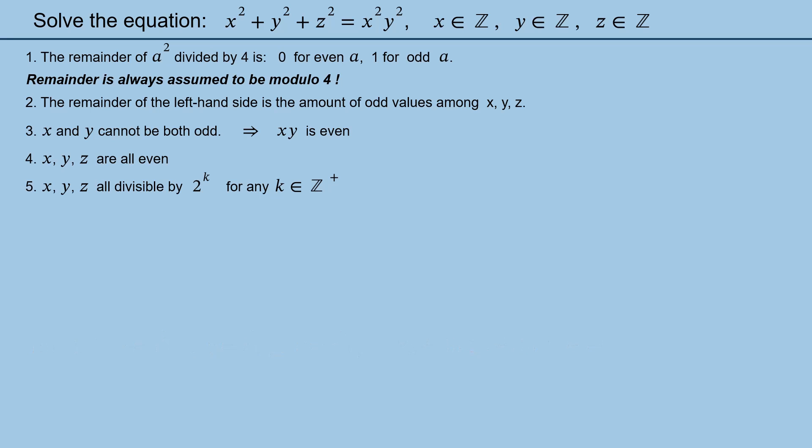Do we have a number divisible by any power of 2? We actually do. This is number 0, of course. And 0 is the only number divisible by any power of 2. This means that x, y, and z must all be equal to 0. Indeed, 0 values of x, y, and z provide the solution of the equation, which was obvious from the very beginning. What wasn't obvious is that this is the only solution. That's what the whole video was about. And this is the end.